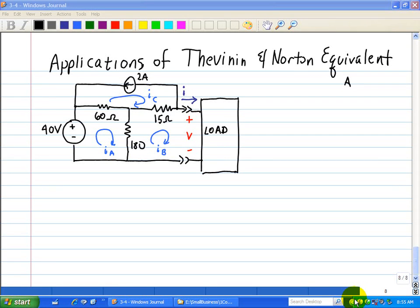In this example, we're asked to find the Norton equivalent for this circuit. The circuit reduction technique will not work here since this is a ladder network.